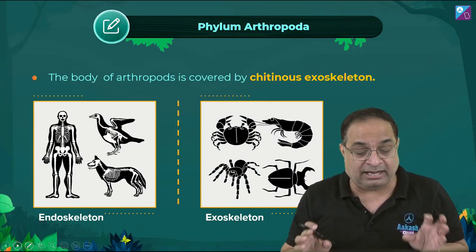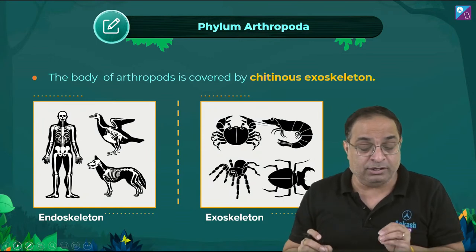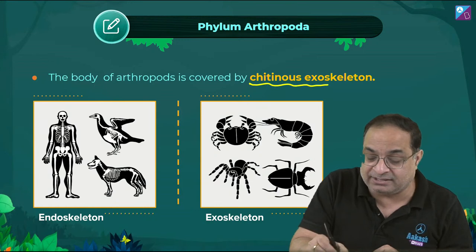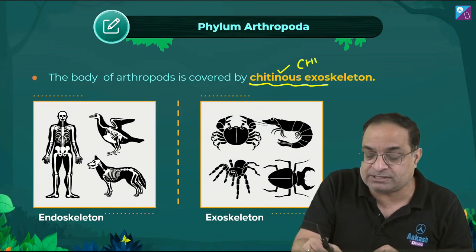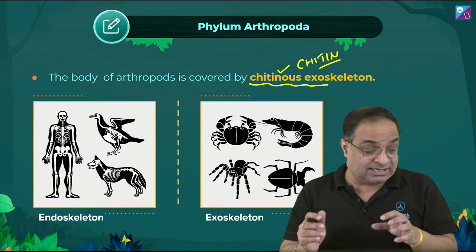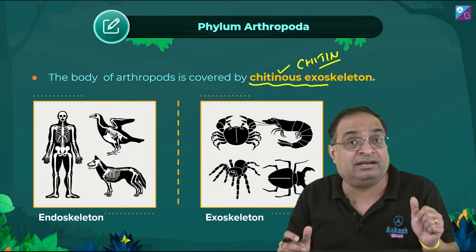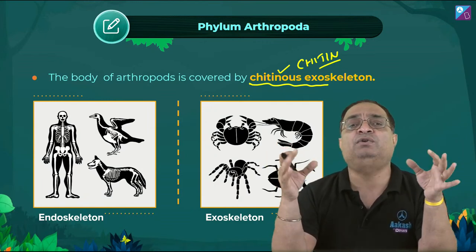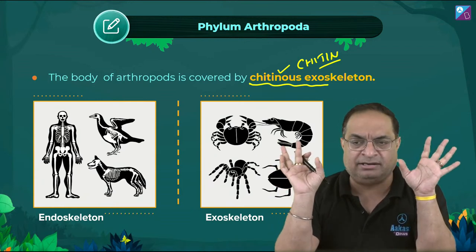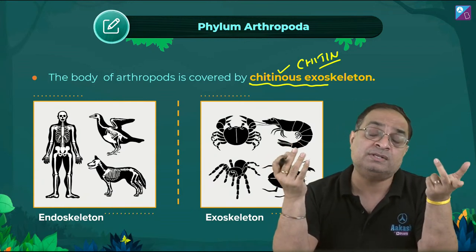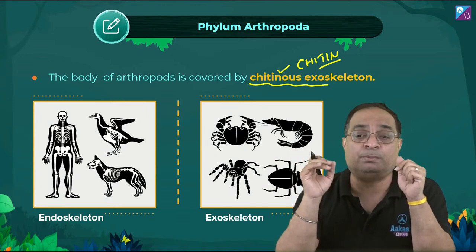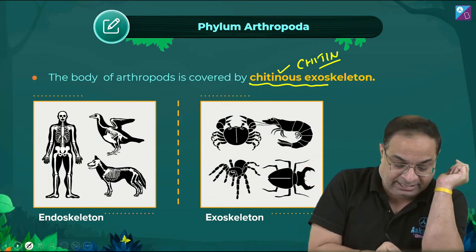The next feature of Phylum Arthropoda: the body of arthropods is covered by a chitinous exoskeleton — this is very important. The exoskeleton is made of polysaccharide chitin, which is why environmental conditions do not easily affect them. That is also why arthropods are the most successful animals in the entire Animal Kingdom.